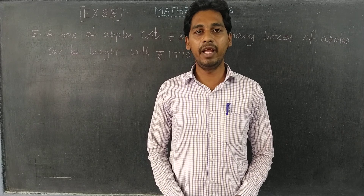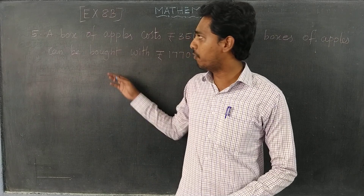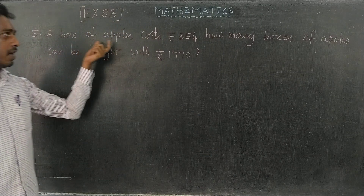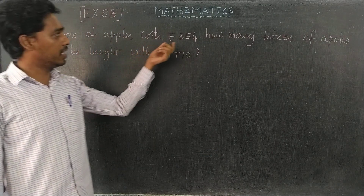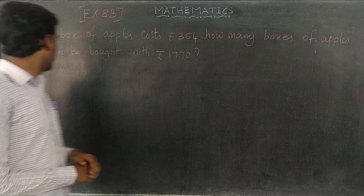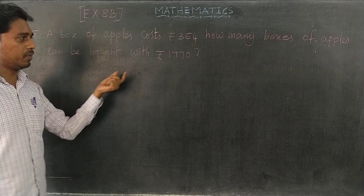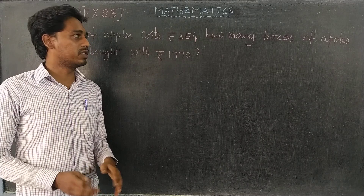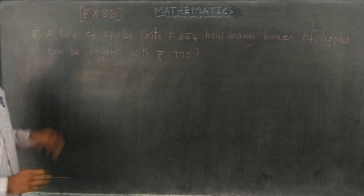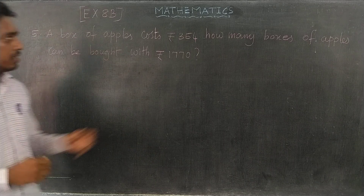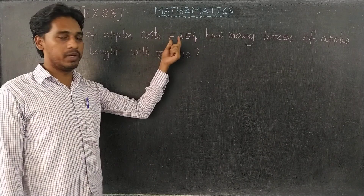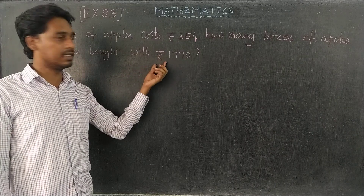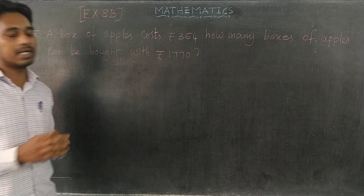Exercise 8, question number 5. A box of art pills costs Rs. 354. How many boxes of art pills can be bought with Rs. 1770?